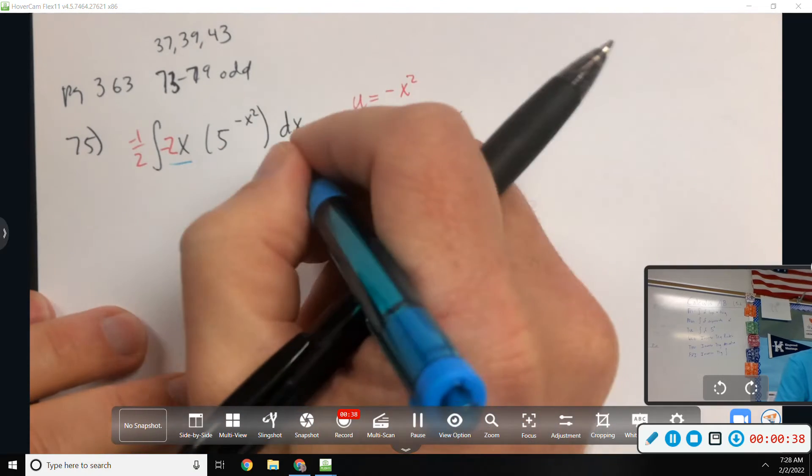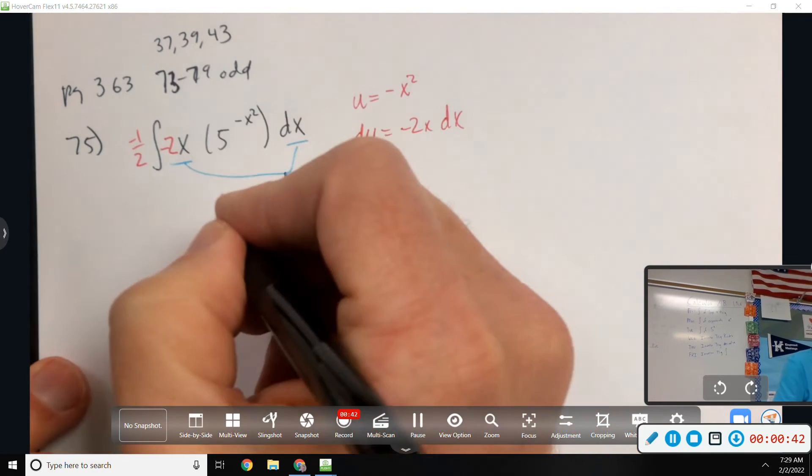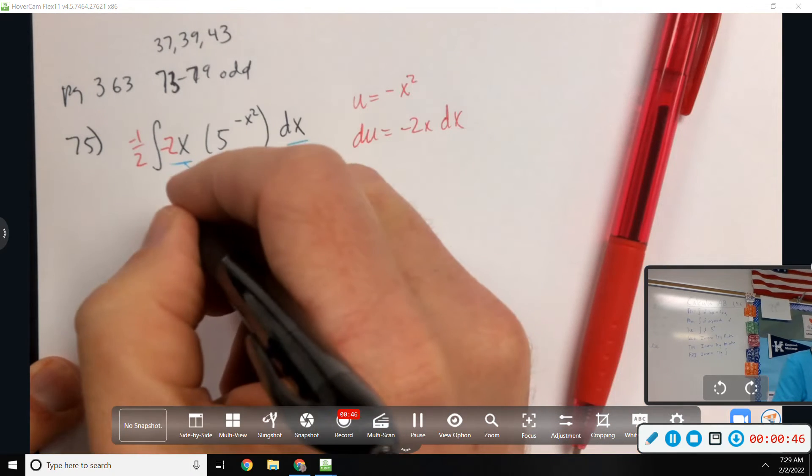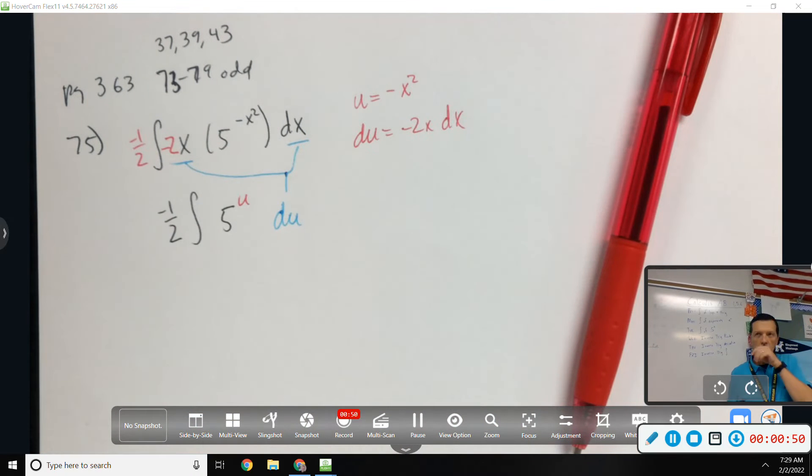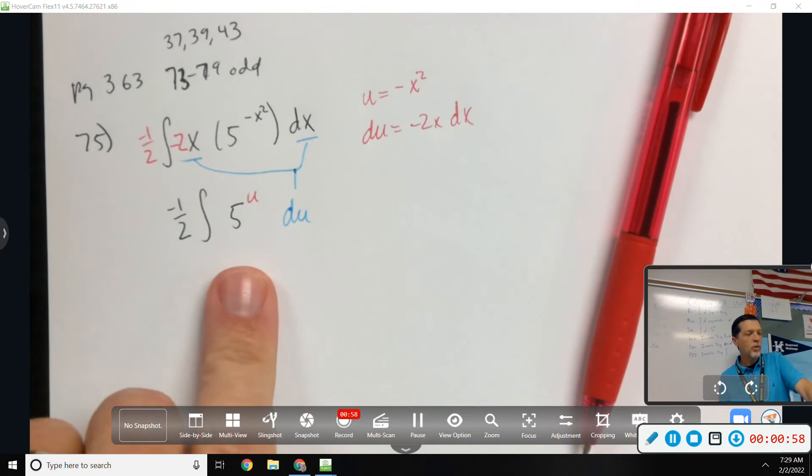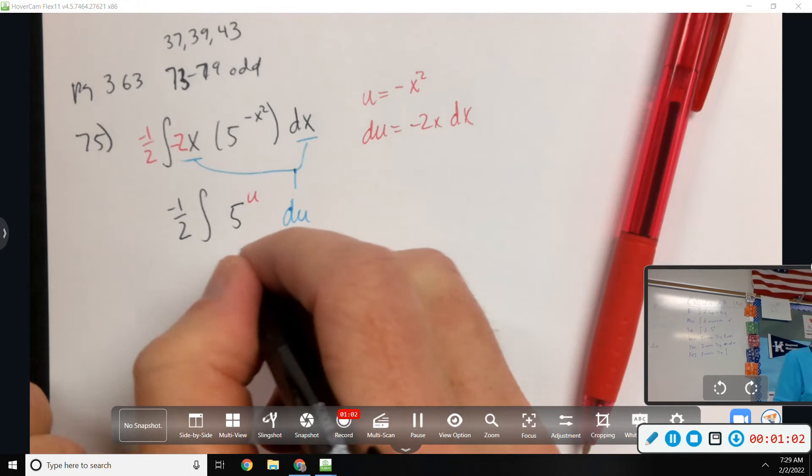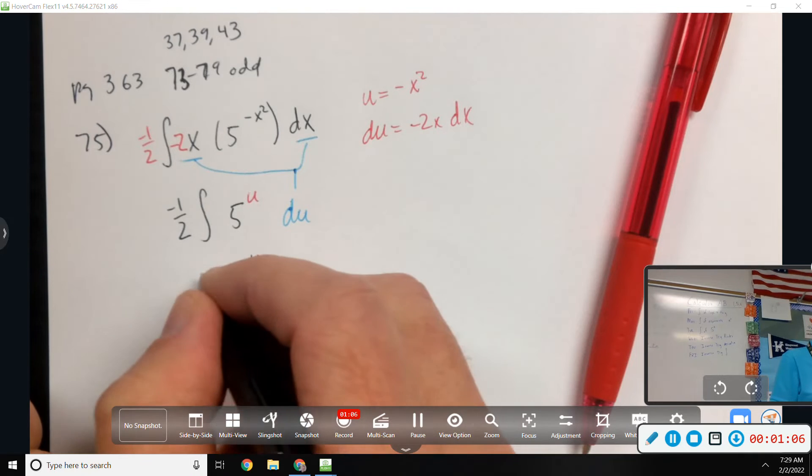So that gives us du and 5 to the u, and that negative 1 half hanging out out front. Now it's down to a straightforward problem. The integral of 5 to the u is 5 to the u, except we need to divide by natural log of 5.